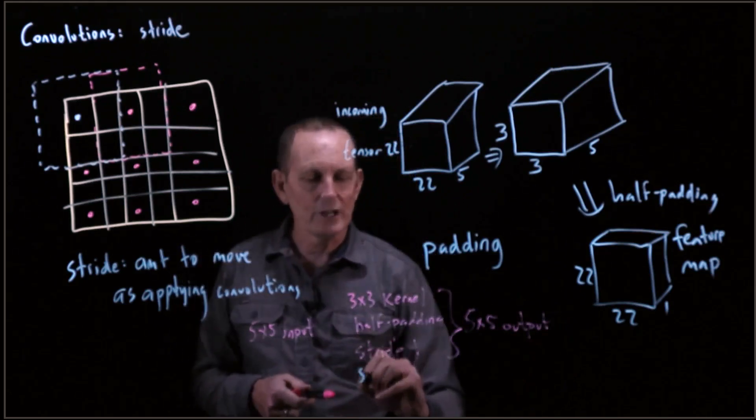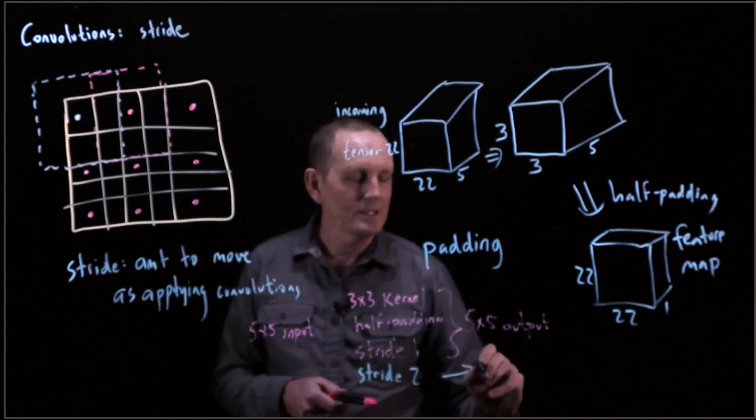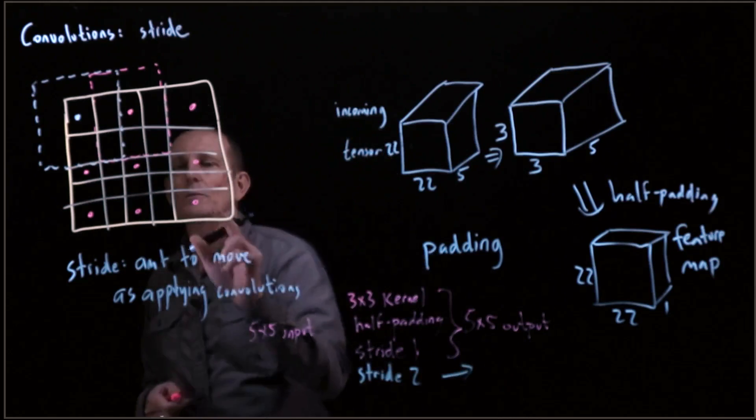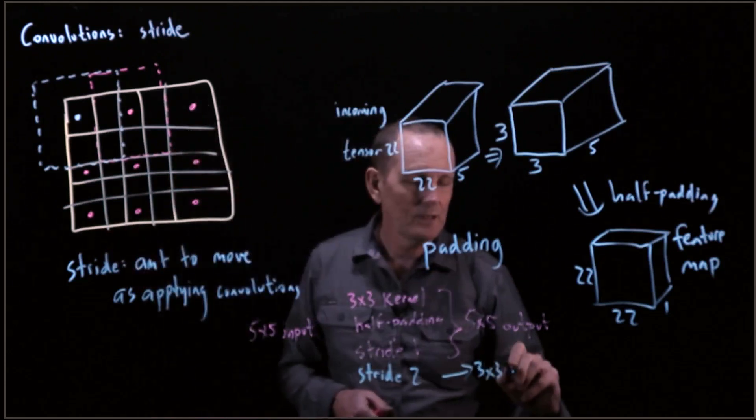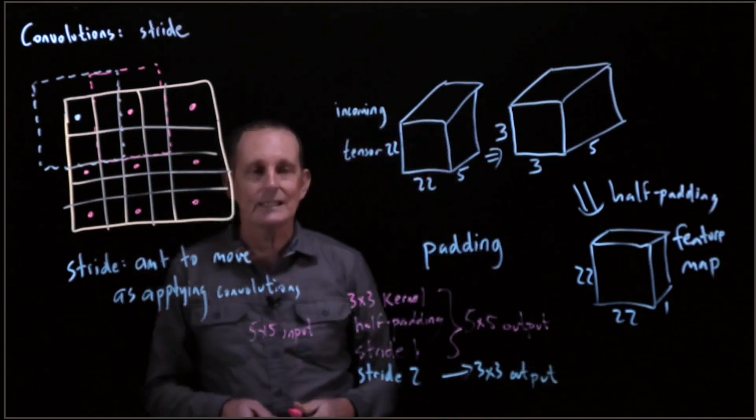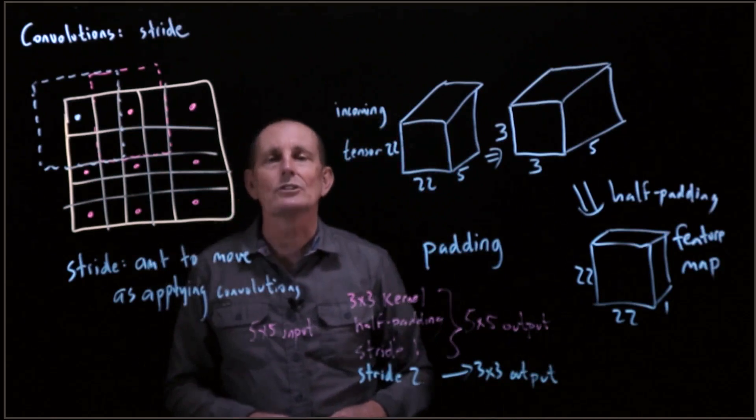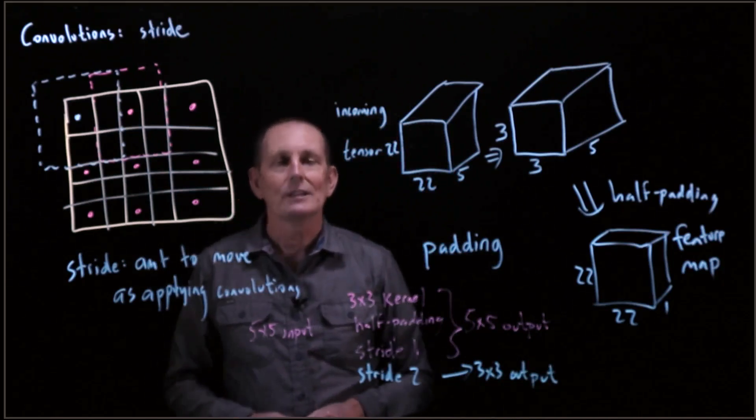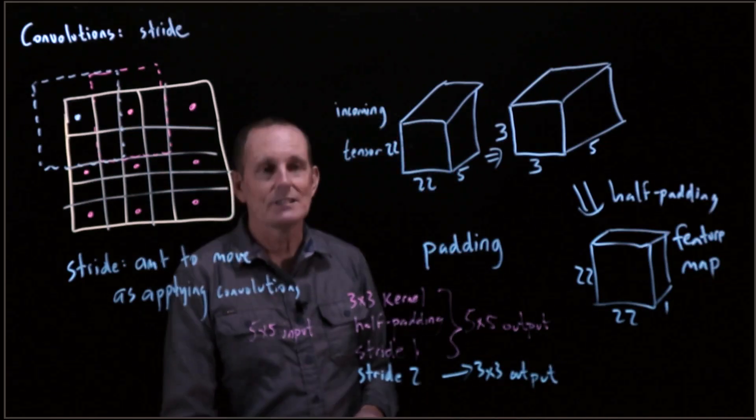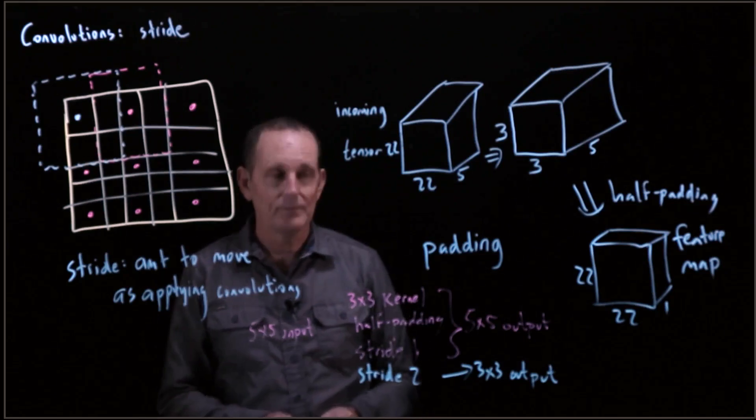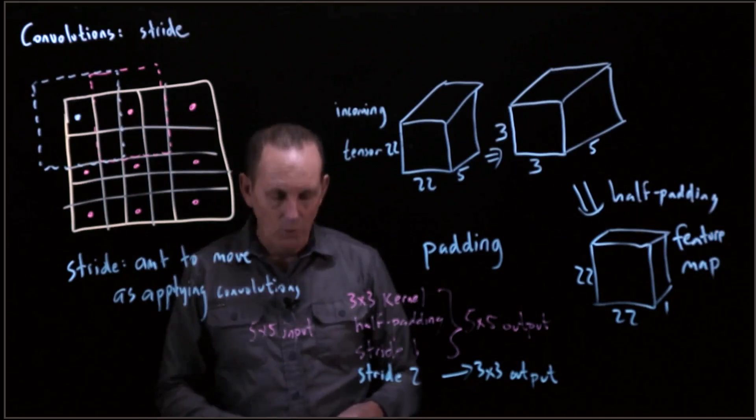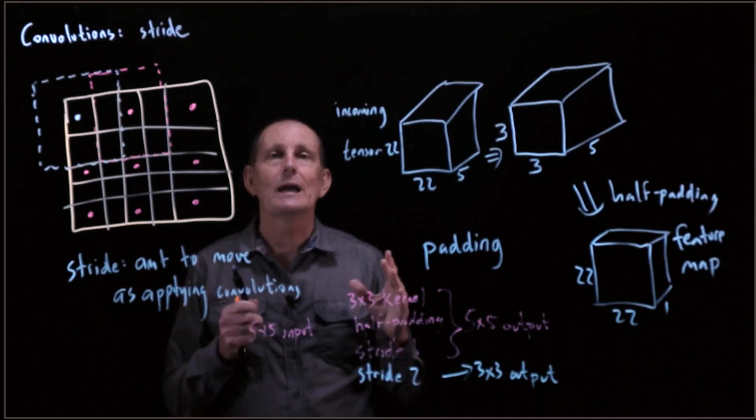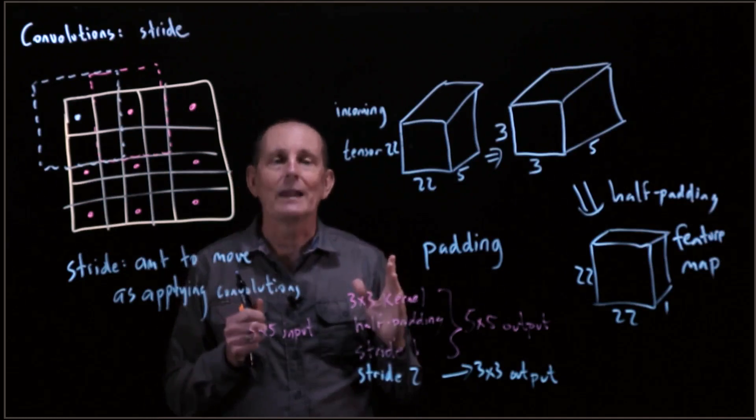If, however, we go ahead and do a stride of 2, that's going to end up with a 1, 2, 3 by 1, 2, 3. So we've seen actually two ways in which an output tensor can be of smaller dimensions than the input tensor, in terms of height and width.